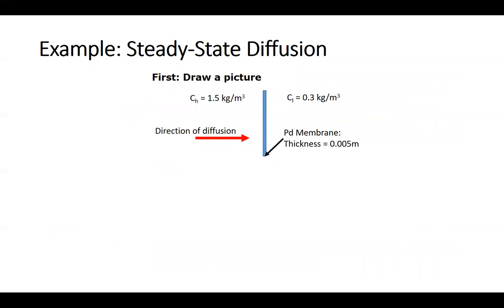First thing we should always do is draw a picture. The simplified version here is that we have a palladium membrane with thickness 0.005 meters, so that's five millimeters thick. On the high side, we have a concentration of 1.5 kilograms per cubic meter. On the low pressure side, we have a concentration of 0.3 kilograms per cubic meter. I've just drawn a red arrow to indicate the direction that the diffusion is going to occur.